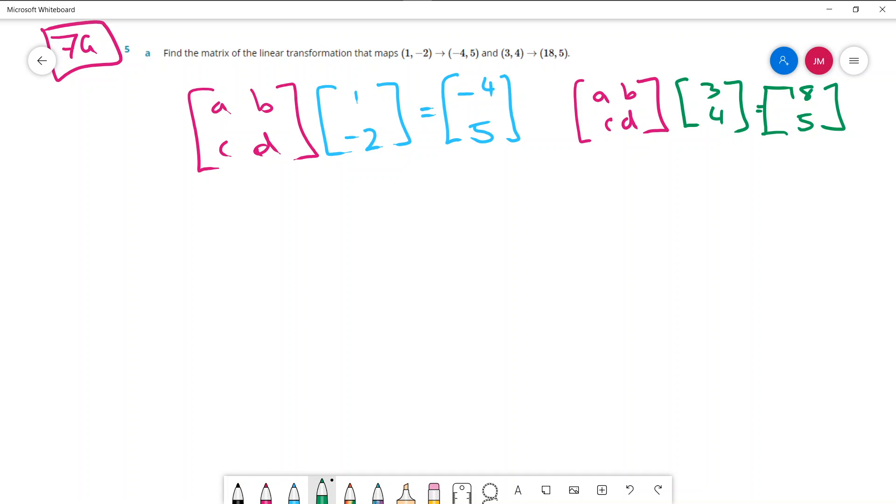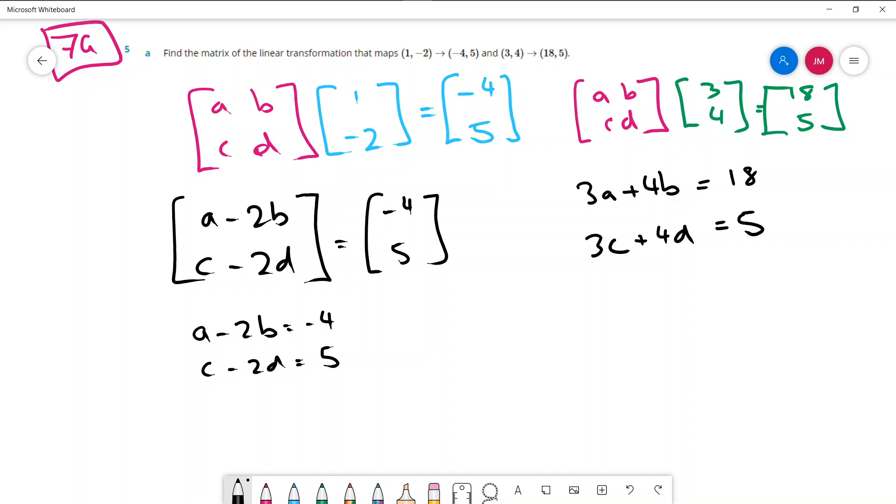So there's going to be some simultaneous equation stuff coming in here. If we multiply this matrix by 1, negative 2 we'd get A times 1 is A and then we'll get minus 2B. Then when we do the second part of it we're going to get C minus 2D and that is going to equal negative 4, 5. So now we have two equations: A minus 2B equals negative 4 and C minus 2D equals 5. Do the same thing to the second equation so I'd get 3A plus 4B and the second equation I'd get 3C plus 4D. That's going to equal 18 and that one's going to equal 5. So now I have four equations and four unknowns.